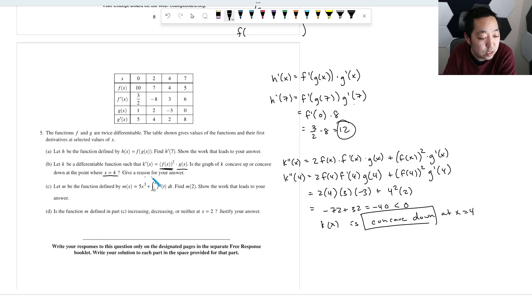Let m be this function. Find m of 2. So m of 2, you're just literally going to plug in 2 into here. So it's 5 times 2 cubed. Everywhere there's an x. Integral from 0 to 2, f prime of t dt.